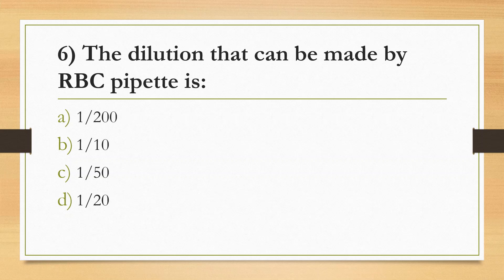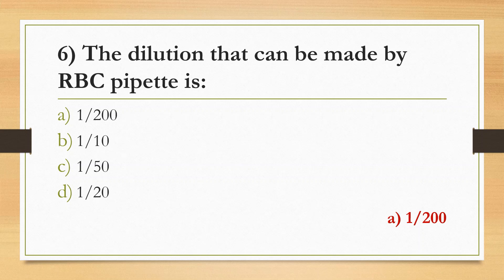Sixth Question: The dilution that can be made by RBC pipette — Option A: 1 in 200, Option B: 1 in 10, Option C: 1 in 50, Option D: 1 in 20. Answer is Option A: 1 in 200. The RBC pipette has a round bulb containing a red bead to mix the blood specimen with diluting fluid. Dilutions possible are 1 in 100 and 1 in 200. The WBC pipette dilution is 1 in 20.